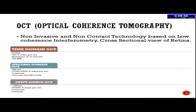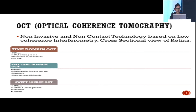OCT is a non-invasive, non-contact technology based on low-coherence interferometry that produces a cross-sectional view of the retina. Earlier, time domain OCT used 810 nanometers of laser light and was very slow, producing only 400 A-scans per second, with a resolution of 10 microns, scanning up to the retinal pigment epithelium.